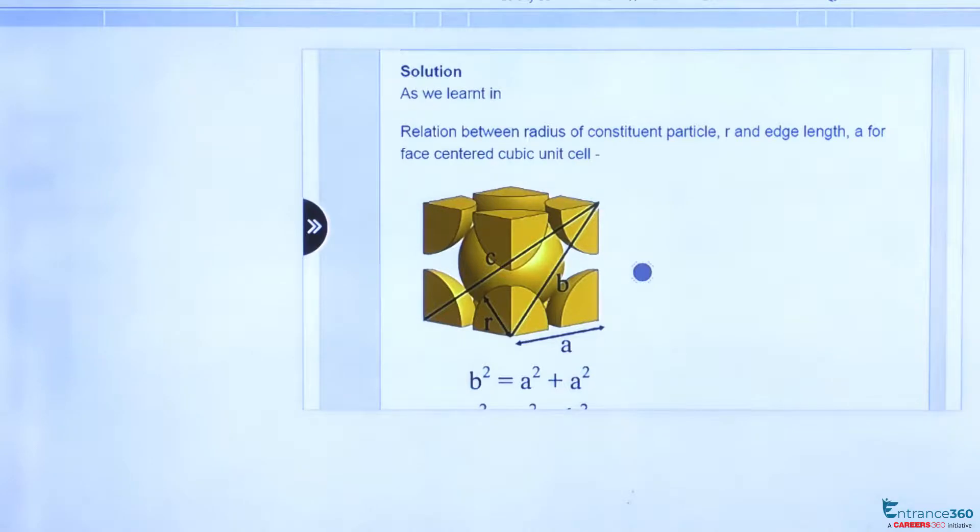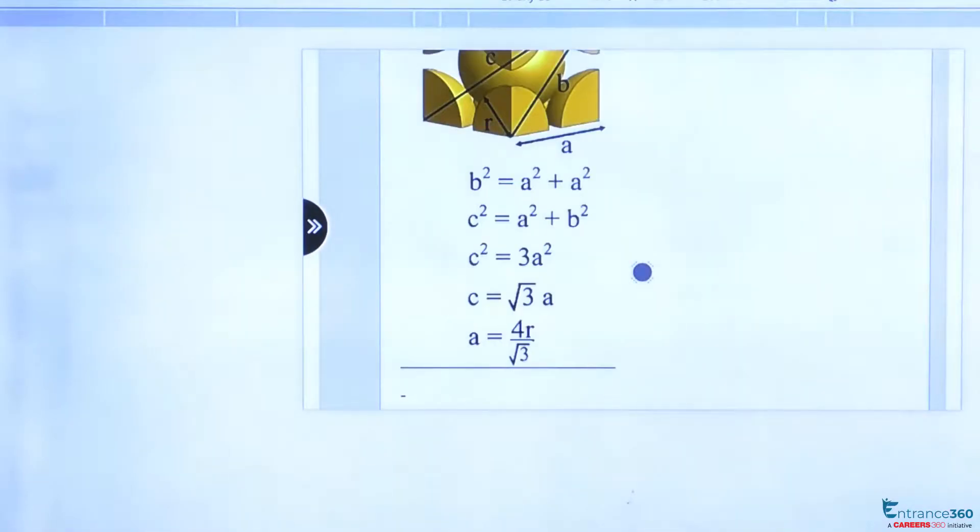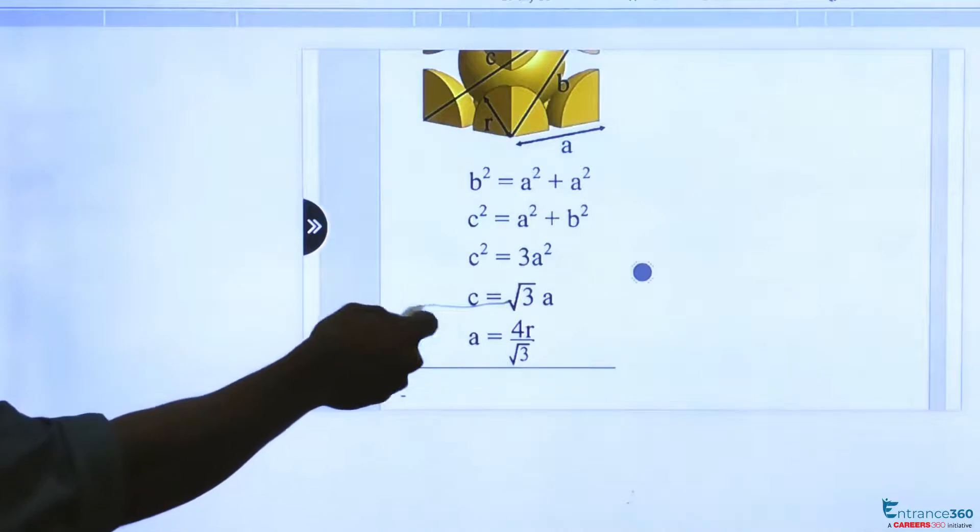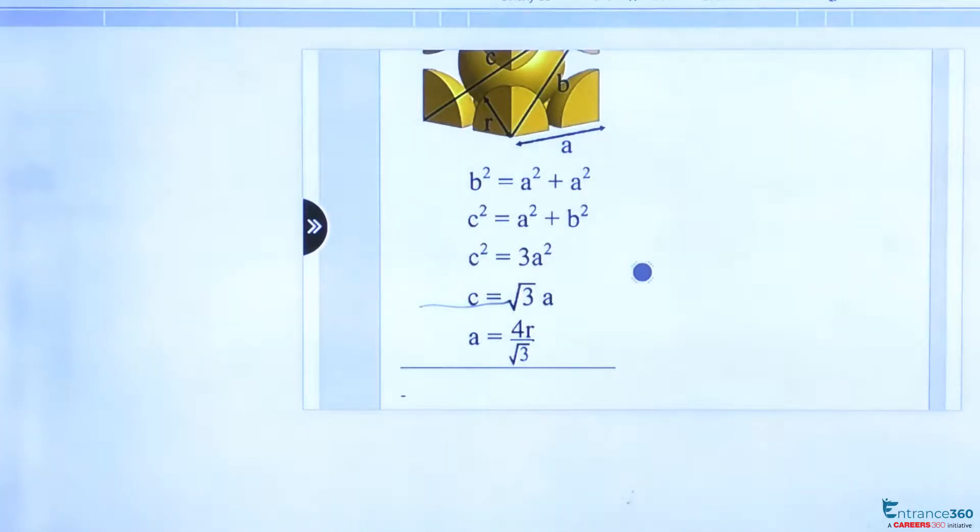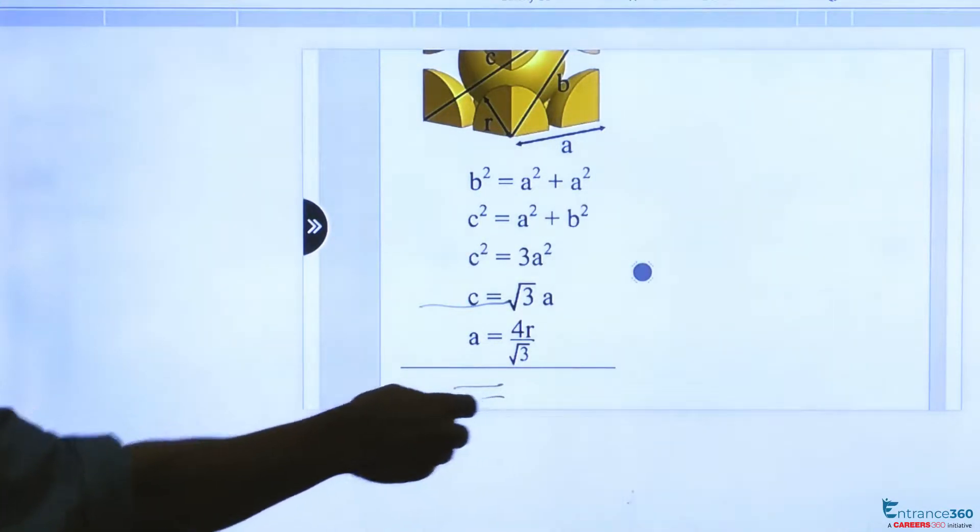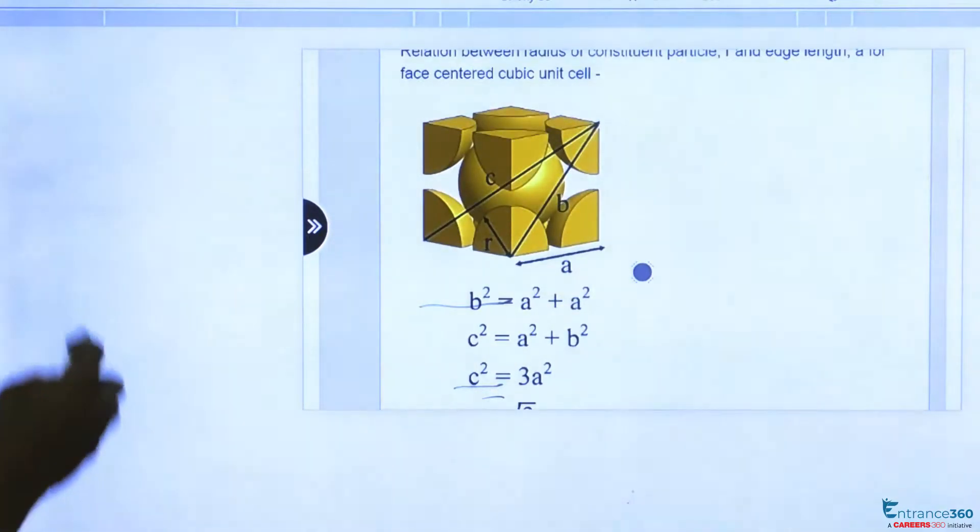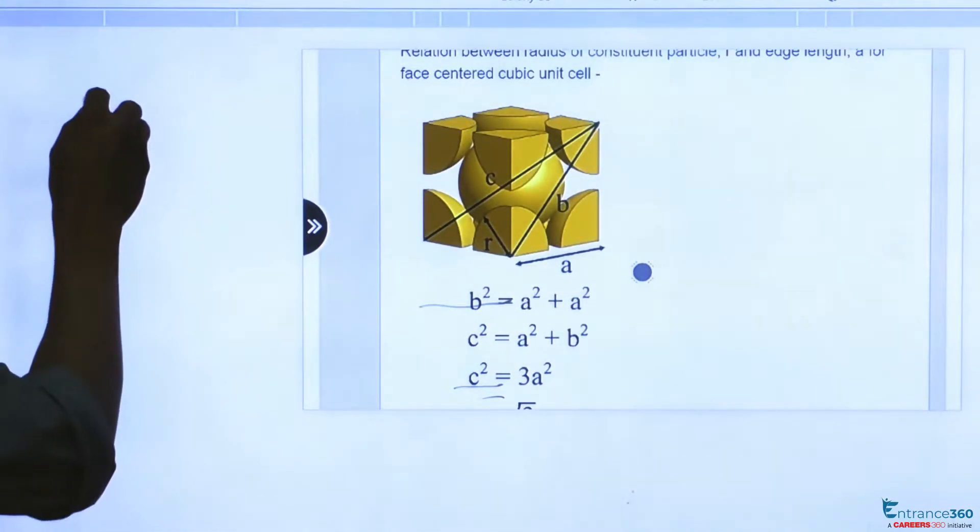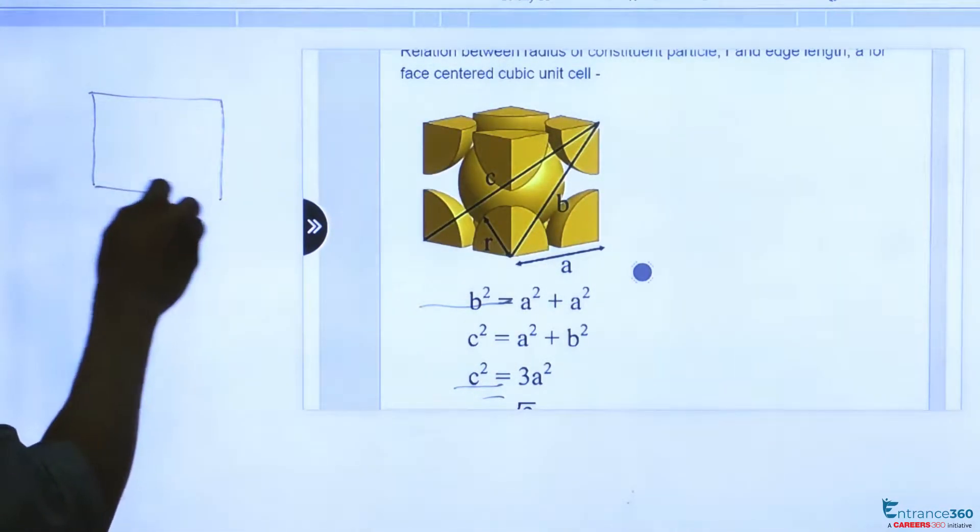As we can see, C is the distance between two corners of the FCC structure, and this is the relationship we have got, which is a = 4R/√3. If we draw this structure of FCC, this is only the face side.